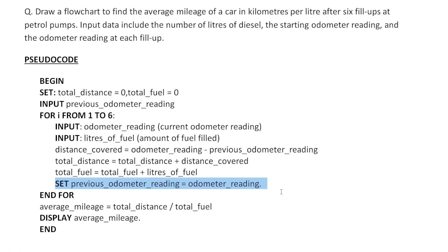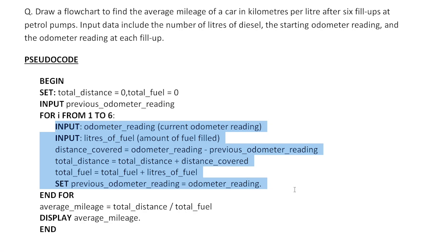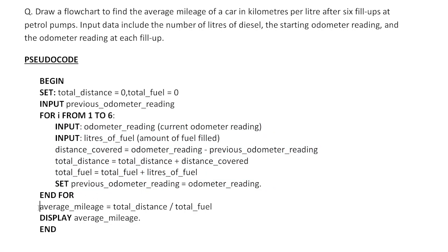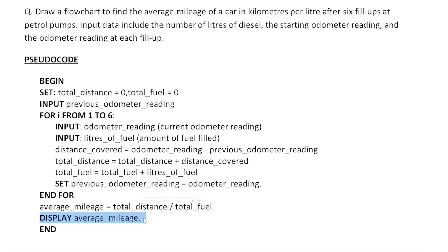After each trip, update the previous automated reading: set previous automated reading equal to current automated reading. After the for loop exits, calculate the average mileage: average mileage equals total distance divided by total fuel. Then display the average mileage and end the program.